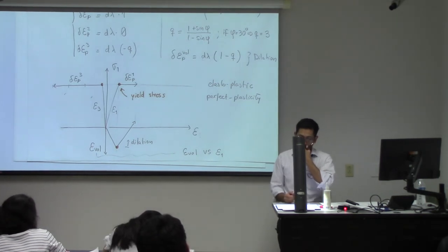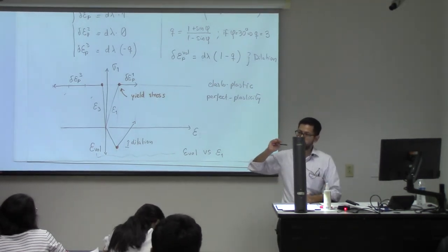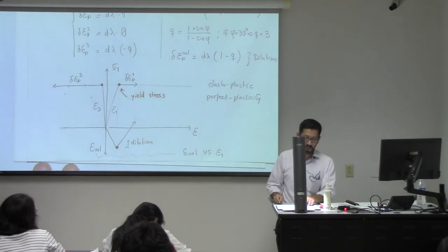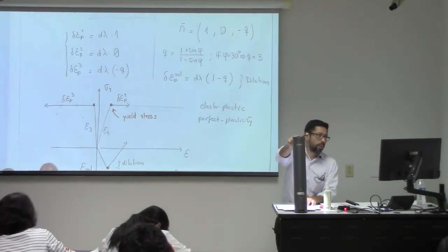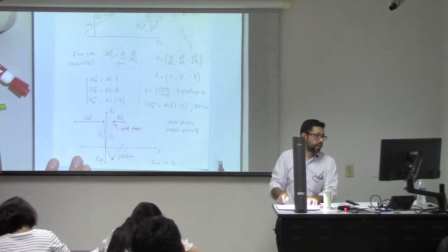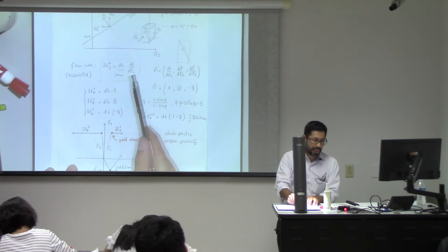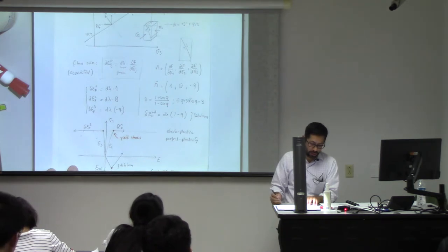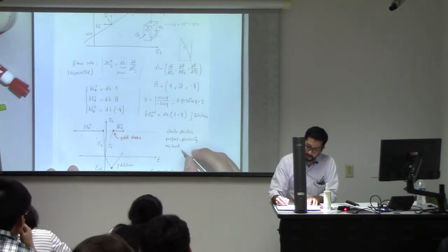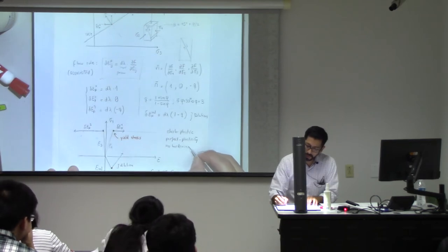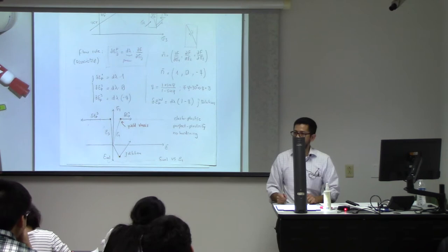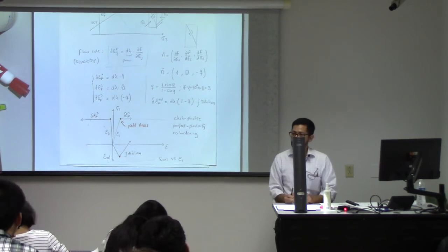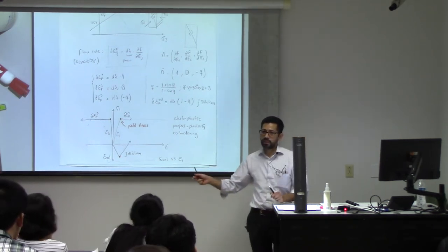This is what Mohr-Coulomb is telling us: after we get to the yield point, stresses do not change anymore, and the plastic strains are going to change according to these equations with a law that is linked to the failure surface. As long as I can compute this normal vector to the surface, I can tell you what is going to be the change in plastic strains. So it looks like it wasn't that difficult after all.